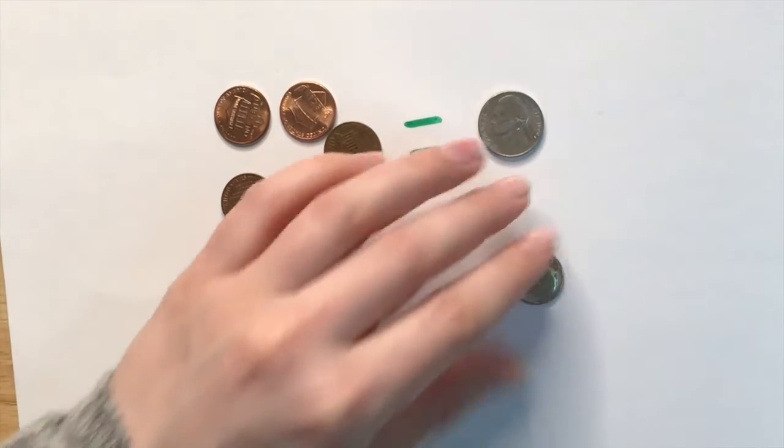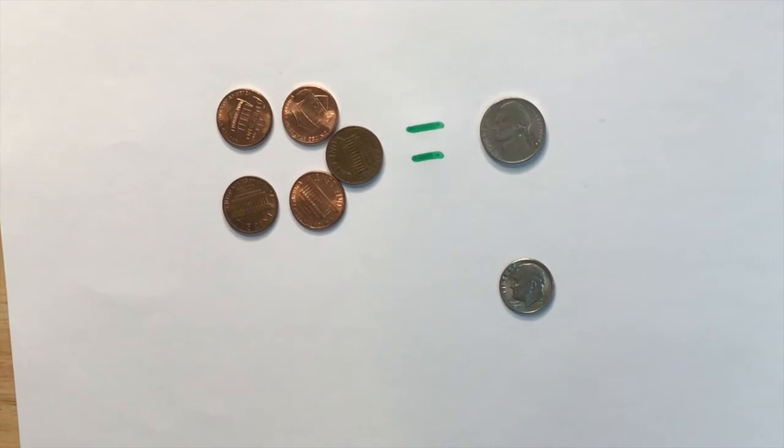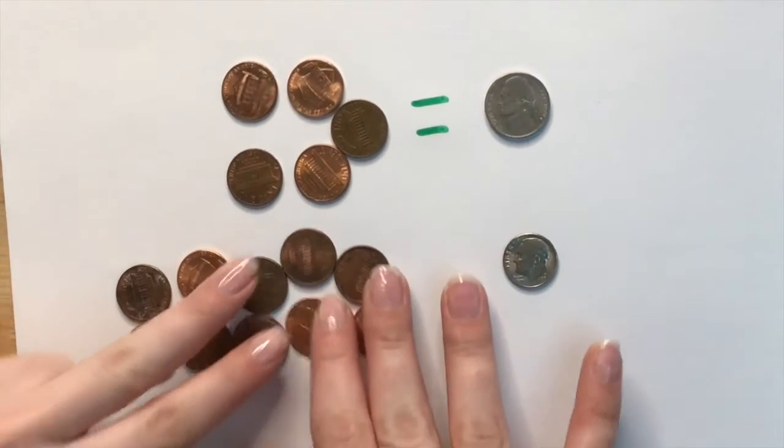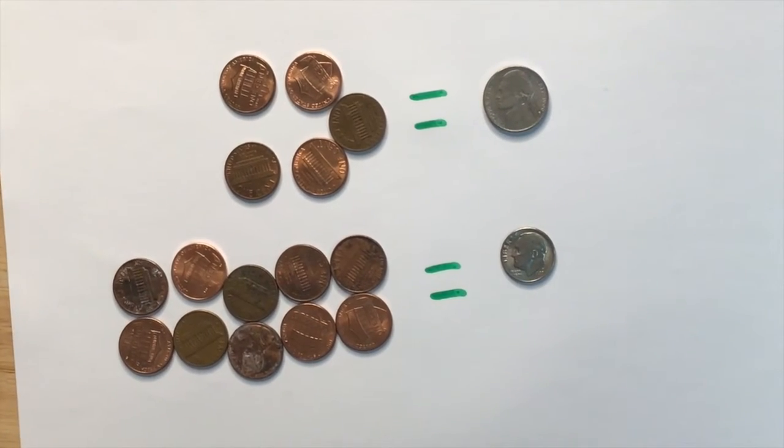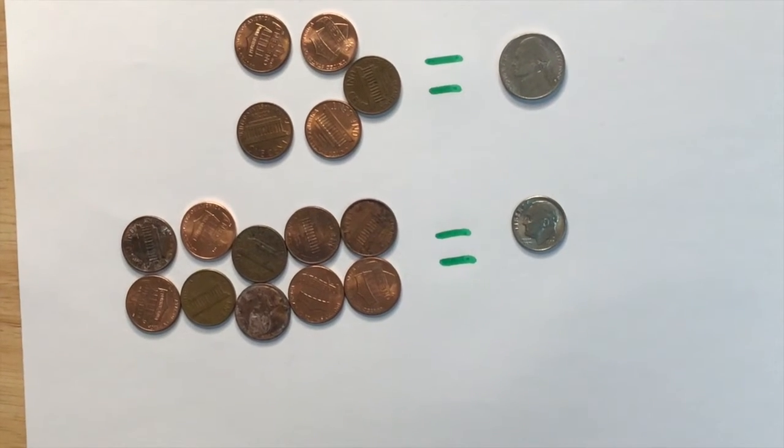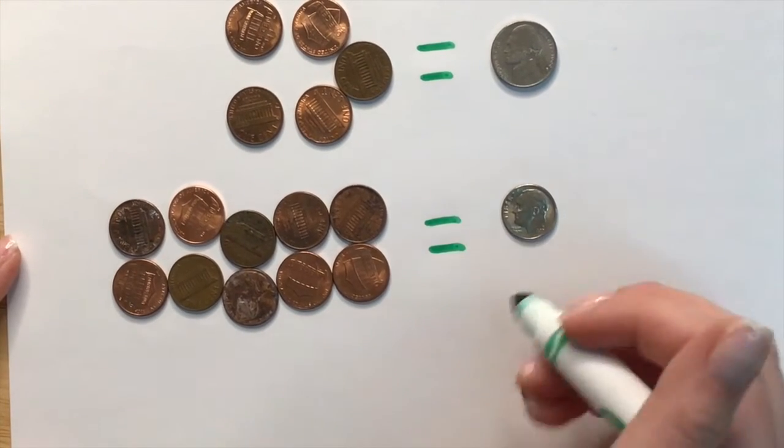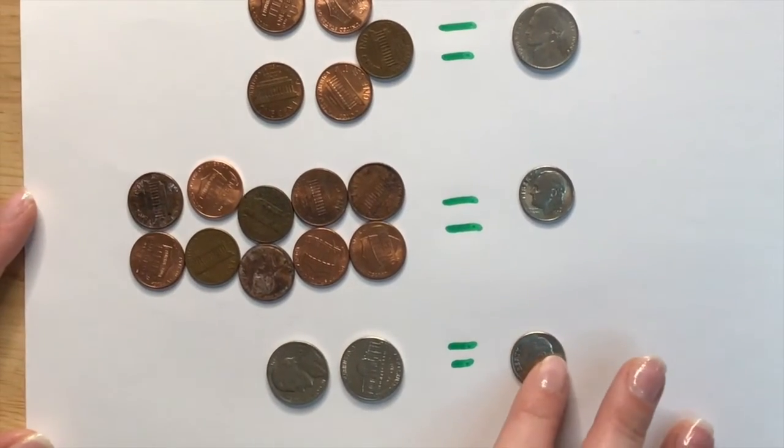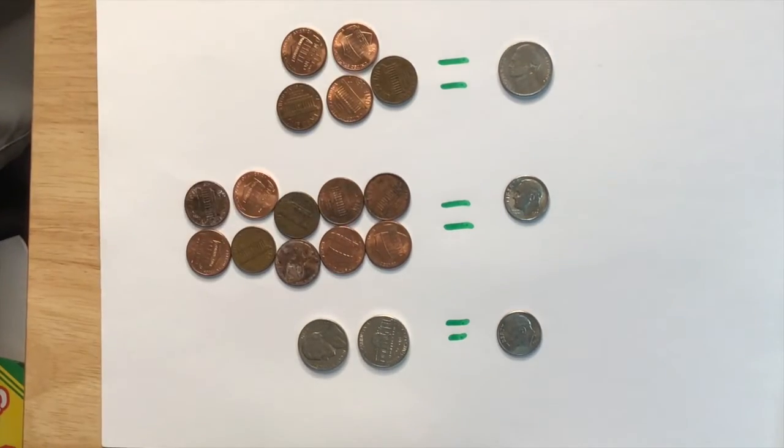So then when we look at a dime we can say that a dime is worth ten cents or ten pennies. So we're going to count out ten pennies and I'll go ahead and put them right here. So we can see that ten pennies equals one dime. Another way we can think about a dime is that a dime is worth ten cents and we know that nickels are worth five cents. So if we wanted to make ten cents with nickels we can use two nickels to equal one dime. So these are just some comparisons of how you can think about pennies versus nickels and pennies versus dimes and nickels versus dimes.